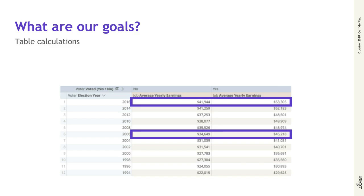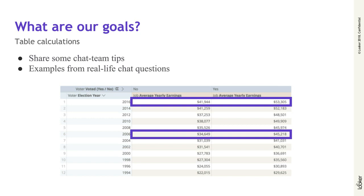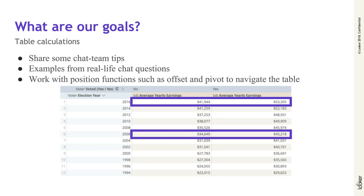Our goals are to get comfortable creating and troubleshooting table calculations. I joined Looker in their Department of Customer Love, and the chat team there has seen their fair share of complex table calculations. I want to share some of the tips and tricks that we use to break down functions as we write them. All of today's examples are derived from real-life questions that we've gotten on chat, so these are things that people are really implementing in their data and may have use cases in your own explorers as well. Our last objective is to cover how functions can help us navigate around the data table — for example, grabbing the no value from 2016 and dividing it by the yes value from 2006.